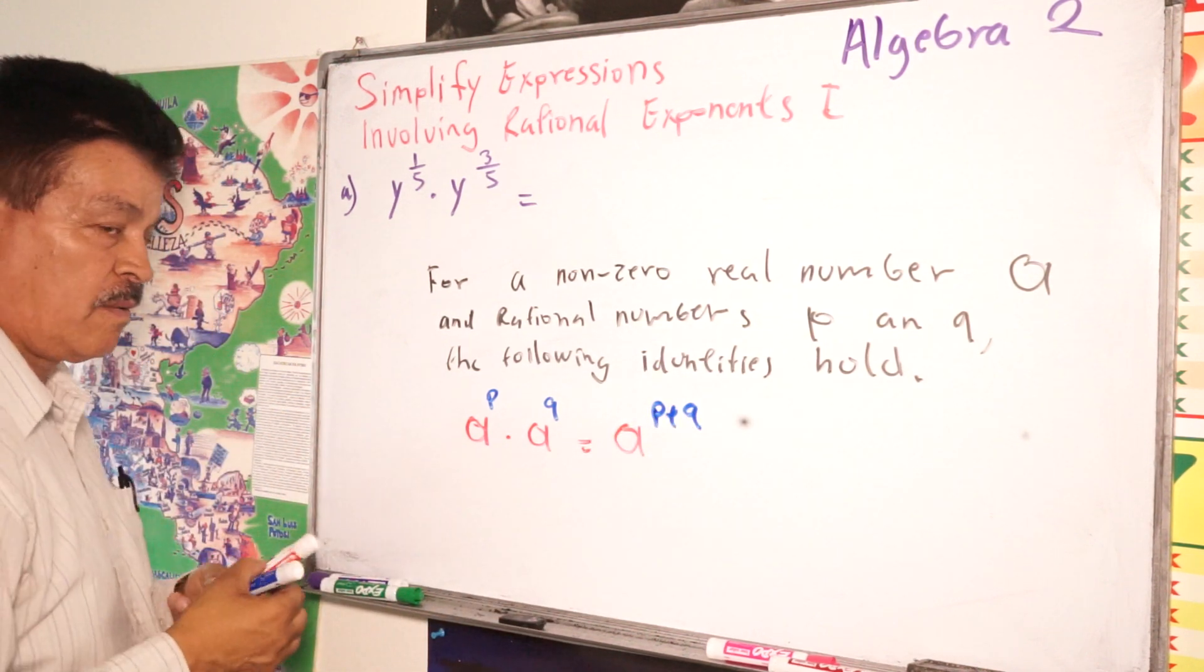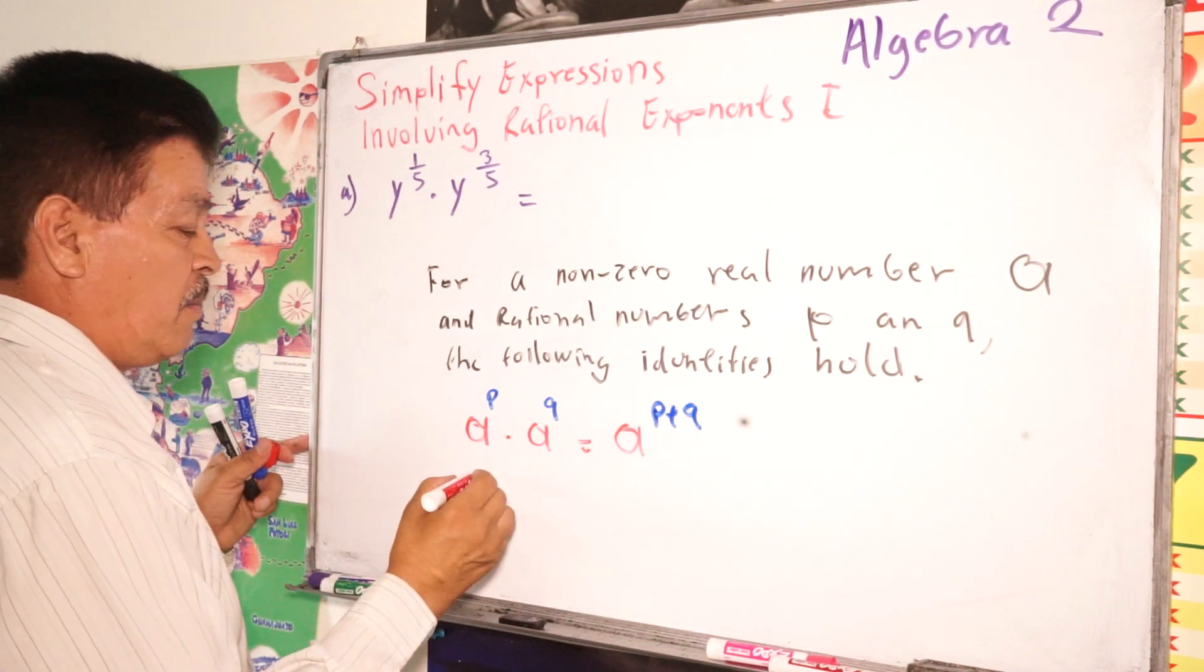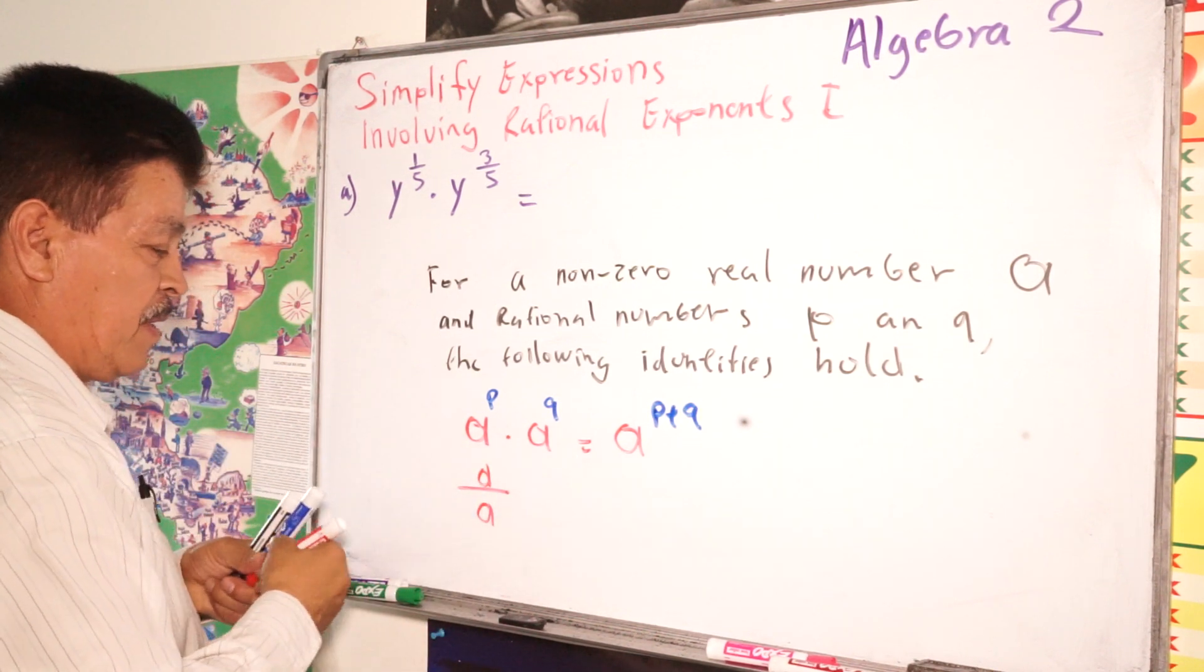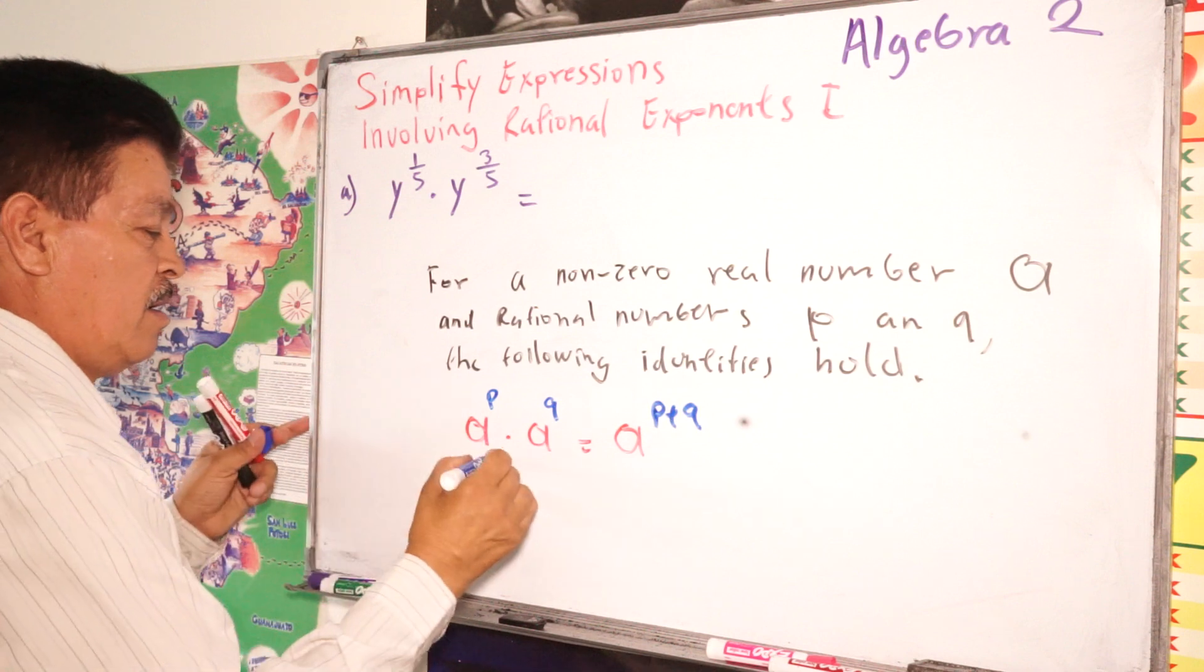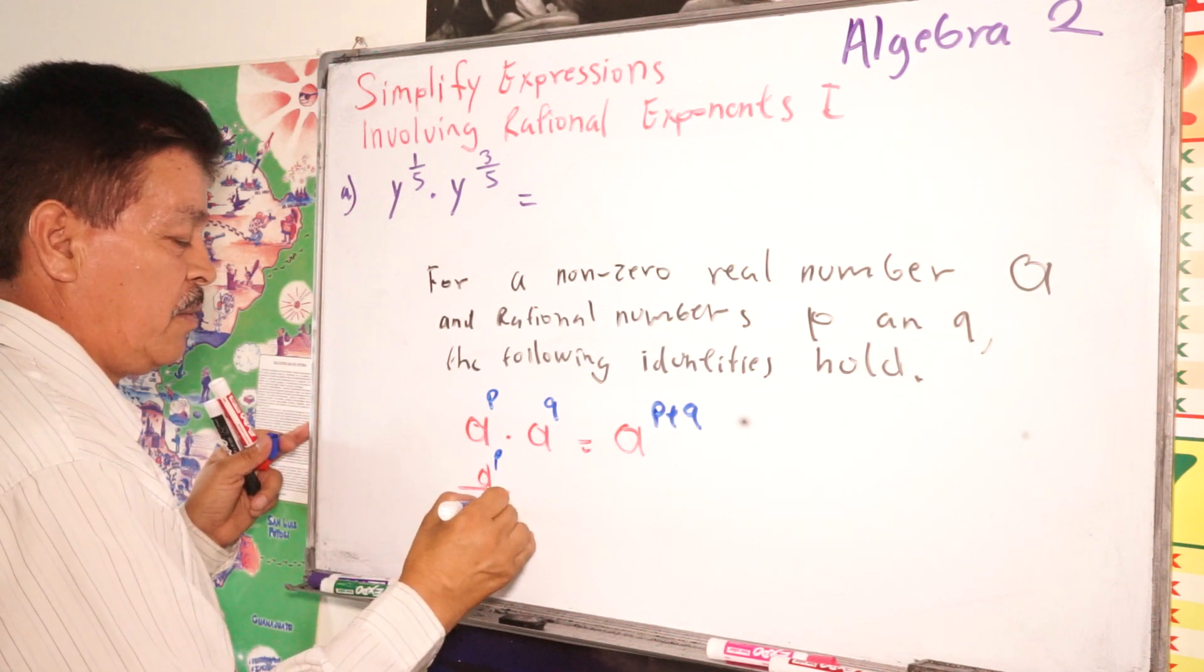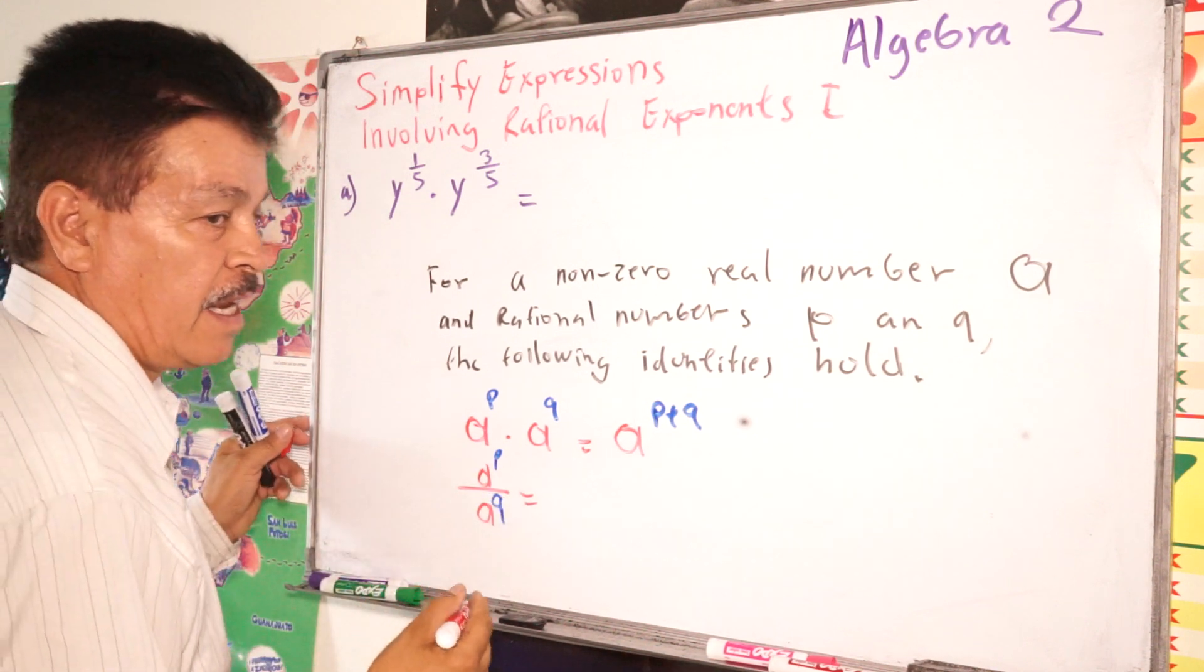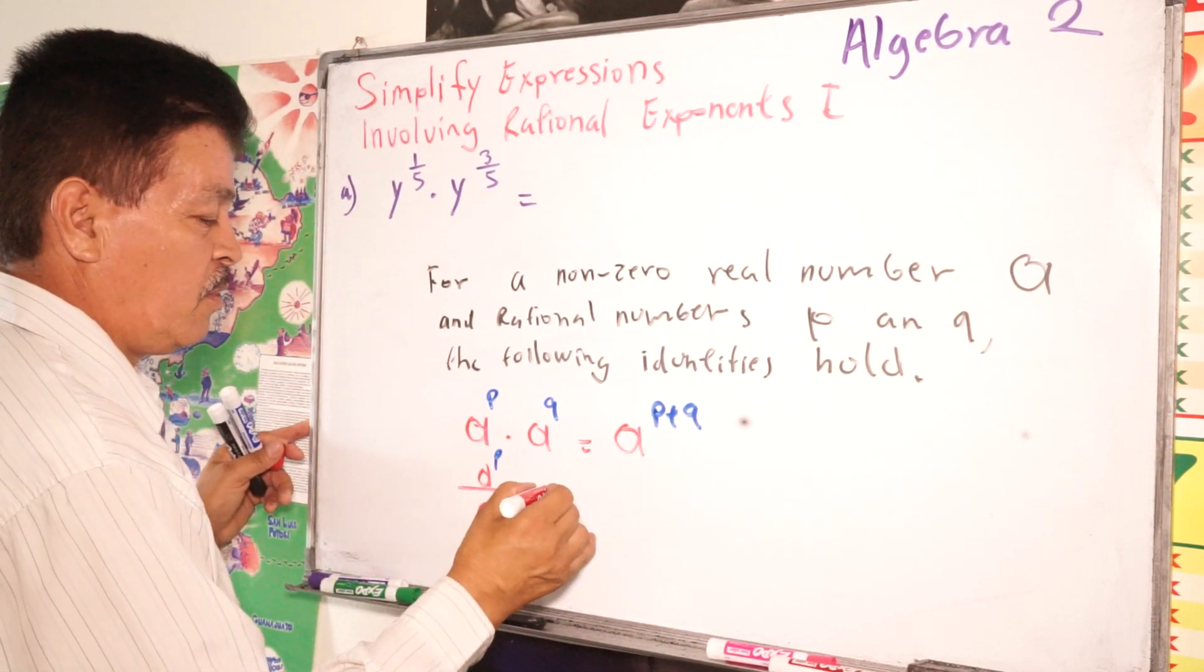Alright? This is one rule. The other rule, we have divided by A to the P power to the Q power. So this is equals, in this case, subtract the exponent.